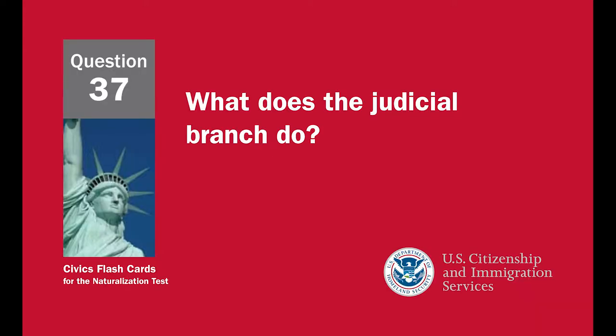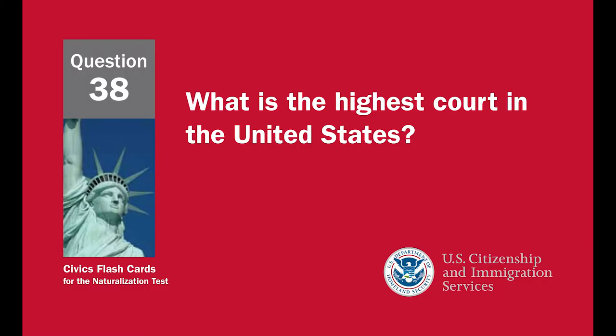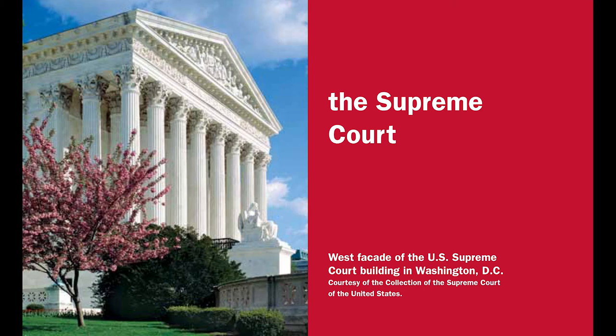What does the judicial branch do? Reviews laws, explains laws, resolves disputes and disagreements, and decides if a law goes against the Constitution. What is the highest court in the United States? The Supreme Court.